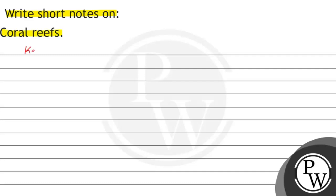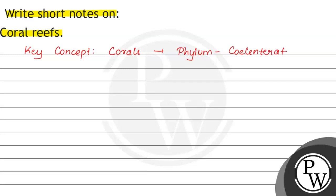This question is about the key concept of corals. Corals are formed by organisms that belong to phylum Cnidaria. Cnidaria has two main forms.